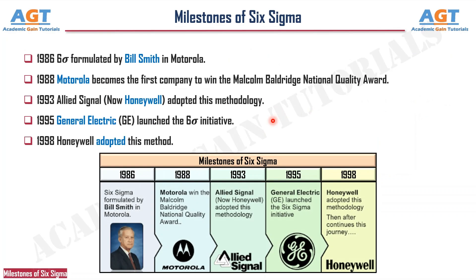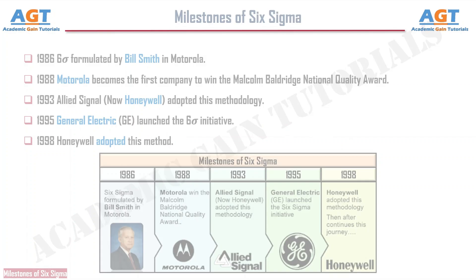Milestones: 1986 — Six Sigma formulated by Bill Smith at Motorola. 1988 — Motorola becomes the first company to win the Malcolm Baldrige National Quality Award. 1993 — Allied Signal adopted this methodology. 1995 — General Electric launched the Six Sigma Initiative. 1998 — Honeywell adopted this method.